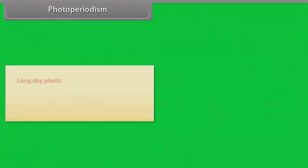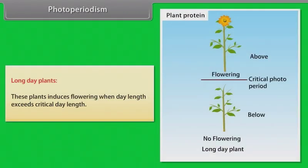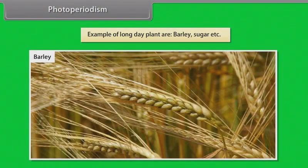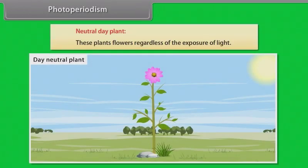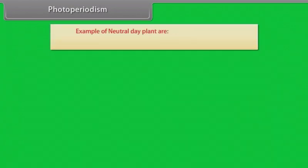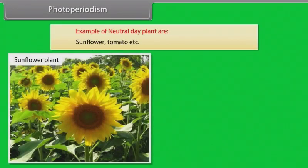Long day plants. These plants induce flowering when day length exceeds critical day length. Example of long day plants are barley, sugar beet etc. Neutral day plants. These plants flower regardless of the exposure of light. Example of neutral day plants are sunflower, tomato etc.